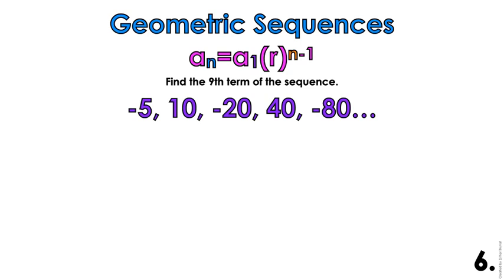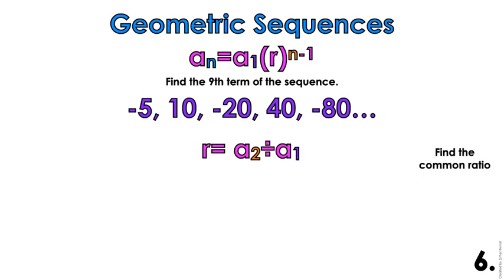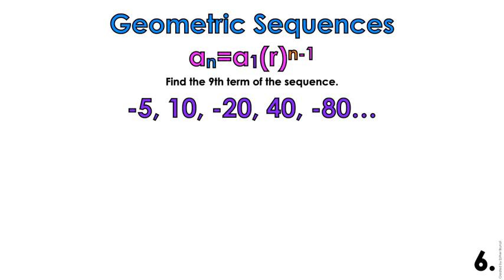On to example 6: you have the sequence negative 5, positive 10, negative 20, positive 40, negative 80, and it says find the ninth term. Right now I have the first five terms. The first thing you do is find the common ratio — divide a2 by a1, which is 10 divided by negative 5. R equals negative 2. Then you find the ninth term using the explicit formula.